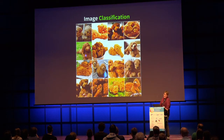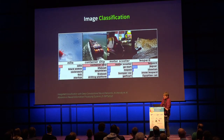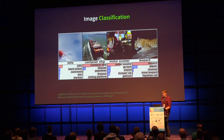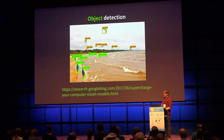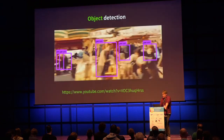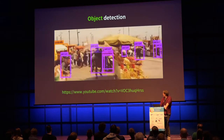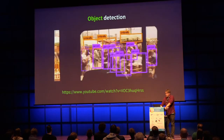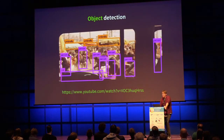Image classification can be posed as: is this a dog or KFC? Or more broadly, which of a thousand possible classes is this image? There's a lot more to computer vision though. Object detection is another big problem — labeling different objects in an image with confidence probabilities. The state of the art is moving so fast that you can do this in real time on frames of a video.